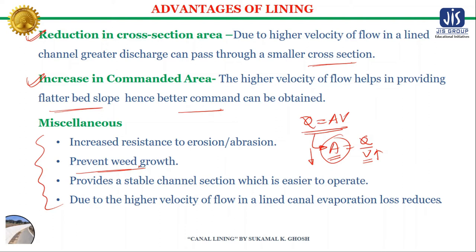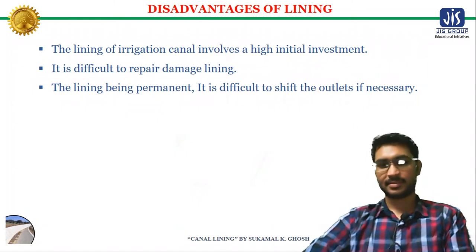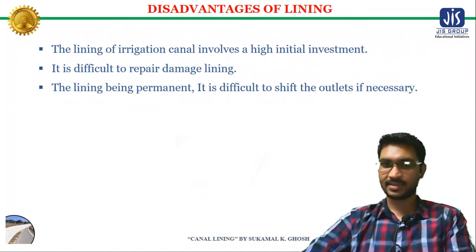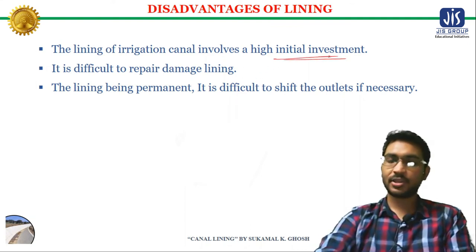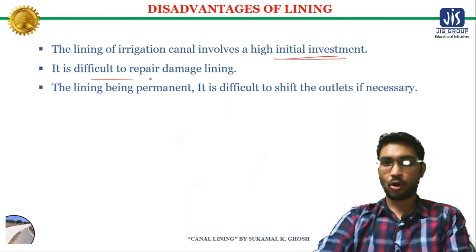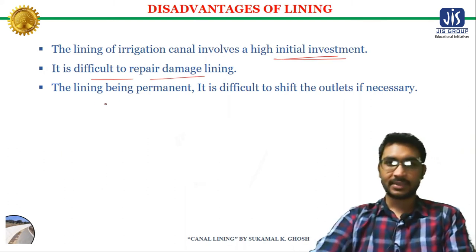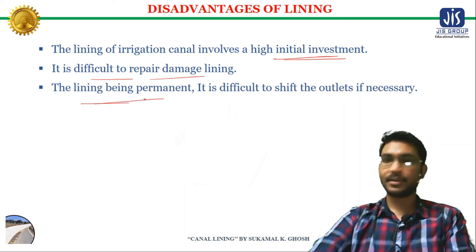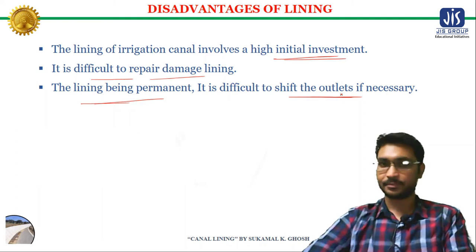Miscellaneous advantages of lining include prevention of weed growth, increased resistance to erosion or abrasion because the lining material is hard, and a stable channel section that is easier to operate. In a lined canal, water loss due to evaporation is also very less due to higher velocity of flow. Though canal lining has many advantages, it has certain disadvantages: it involves high initial investment, damaged lining is difficult to repair, and since the lining is permanent it is difficult to shift outlets if necessary.